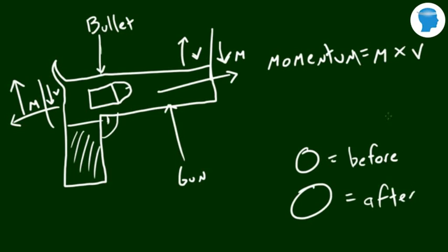Why is this the case? Well, even though we don't know the exact mass of the bullet or the gun, we know that the bullet and the gun both have momentum. But,